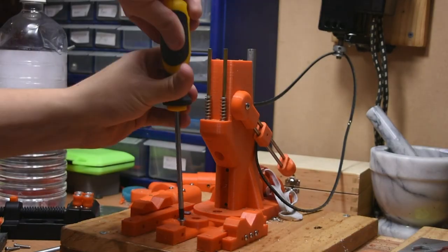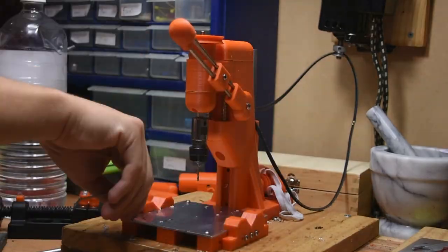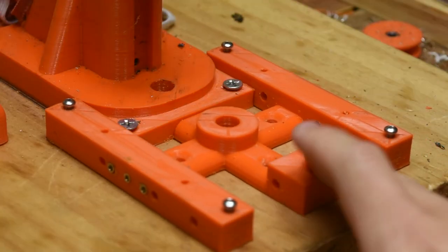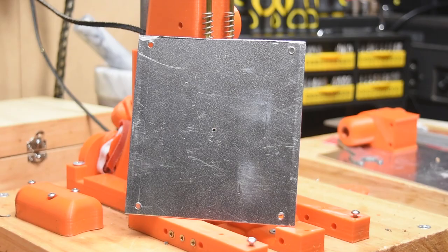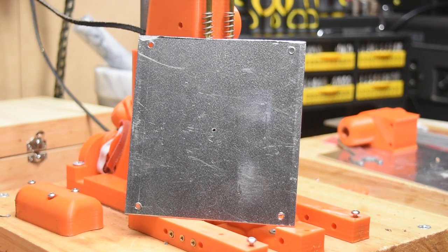First, the table. A pretty important part of the press. The table itself is made of two pieces, one 3D printed base and one aluminum plate. The plate is 101.6 mm by 107 mm by 1.6 mm and has four holes drilled into the corners.